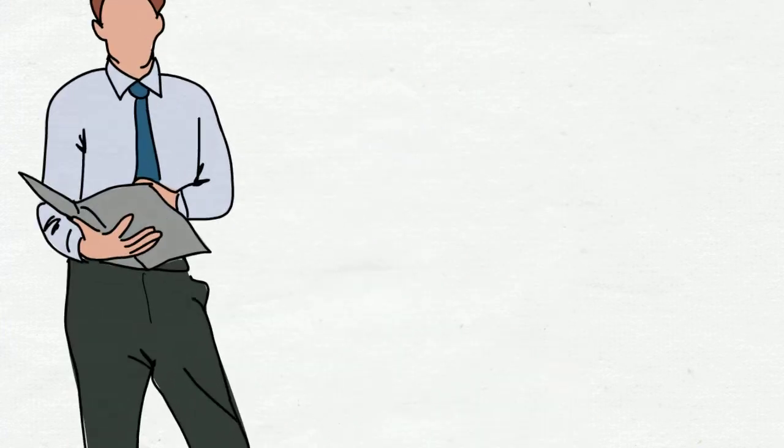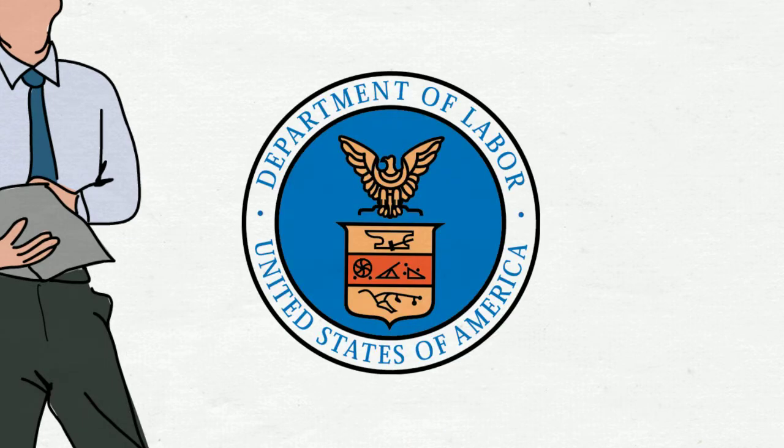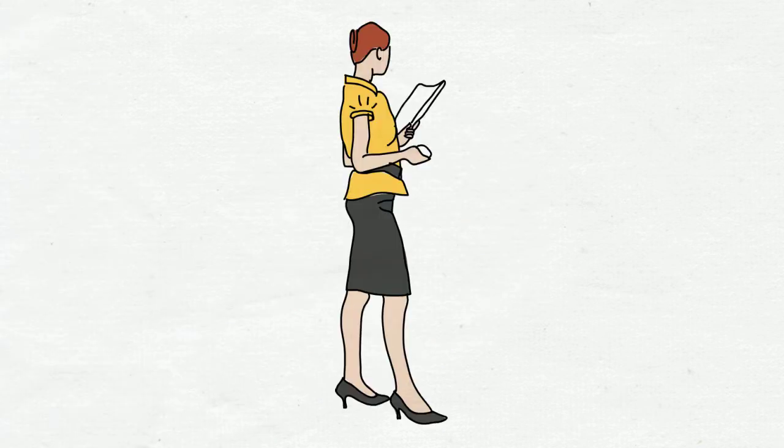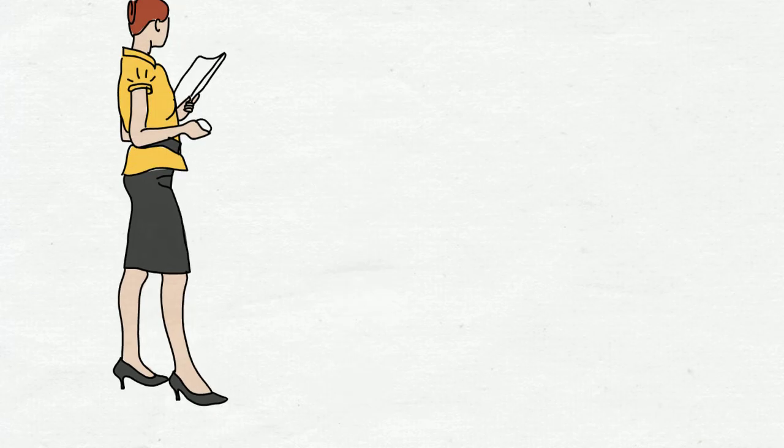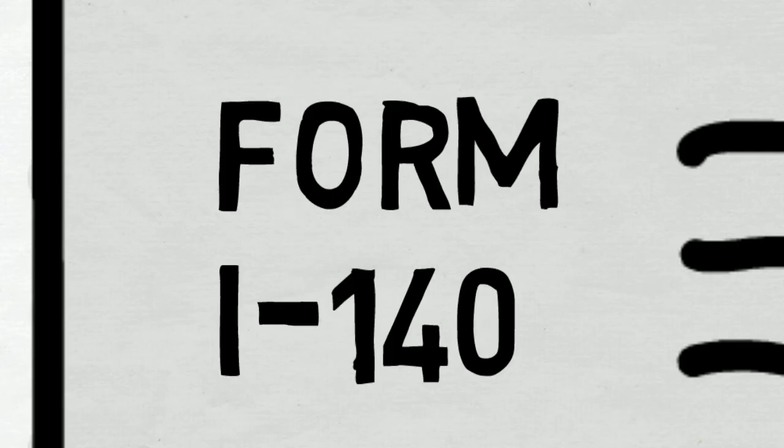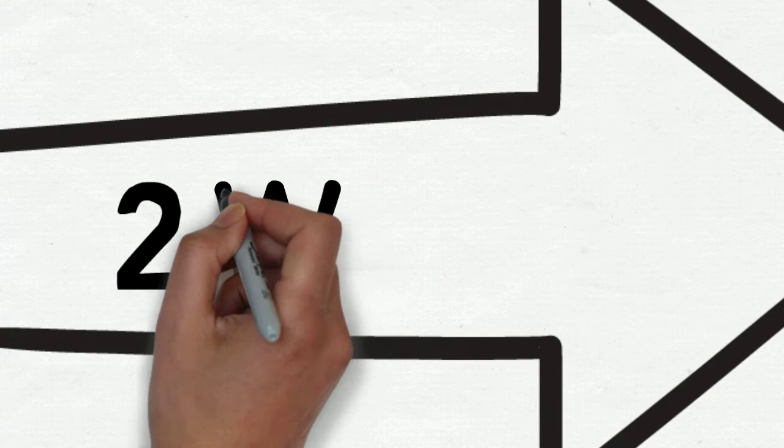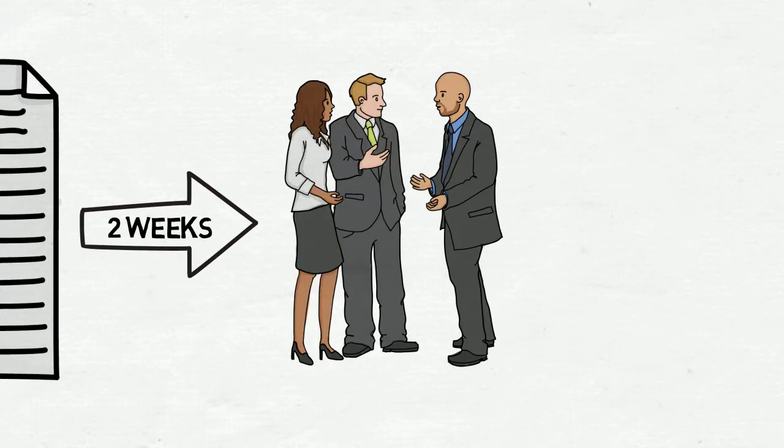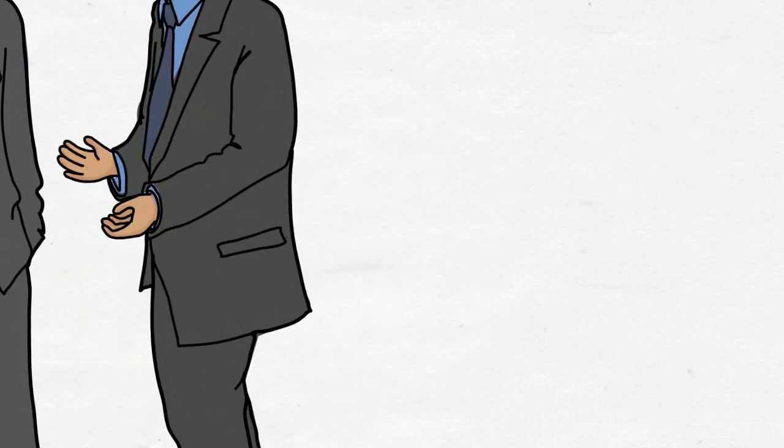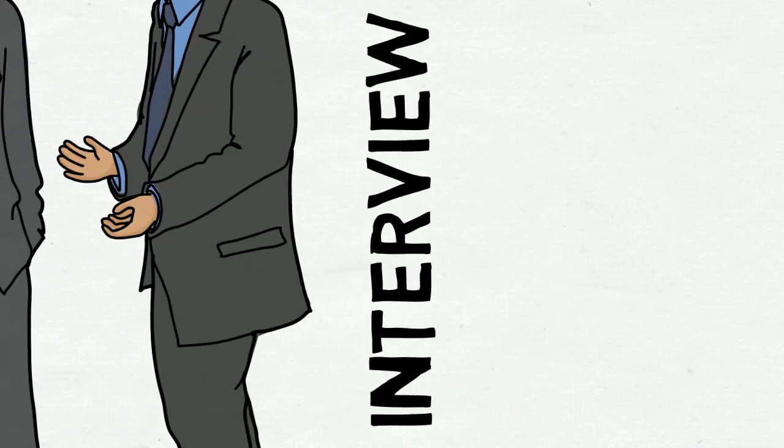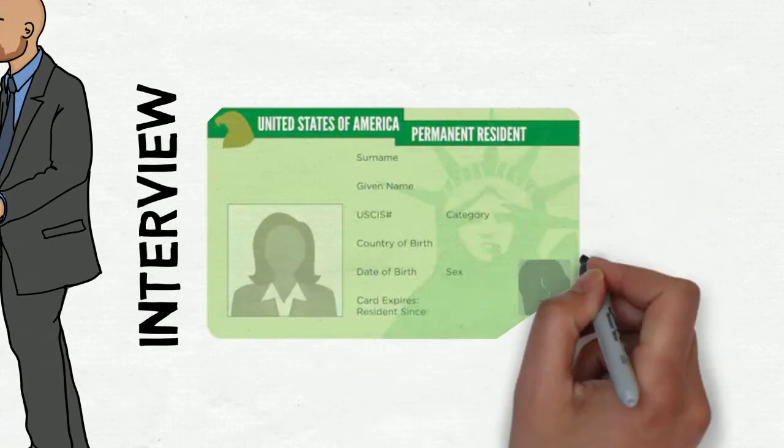Once the company obtains the labor certificate from DOL through its lawyers, the company will make the request for permanent residence under the form I-140, and this process only takes two weeks to get an answer. And lastly, you will request a consular or U.S. CIS interview to get your immigrant visa and permanent resident card.